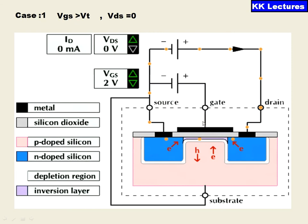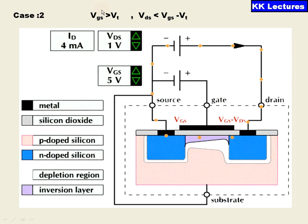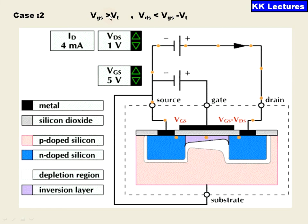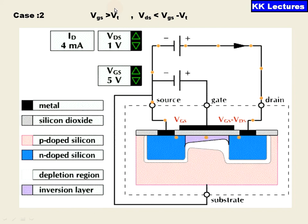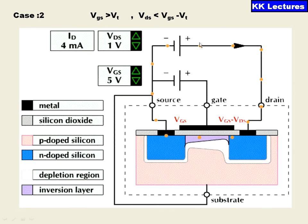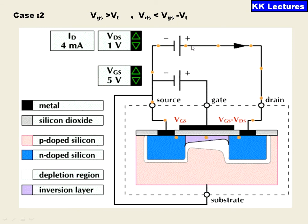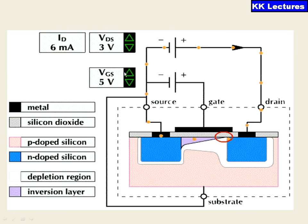When the gate voltage is greater than the threshold voltage and the VDS value is less than the effective gate voltage, there is a possibility of current flowing within the circuit. This is how our NMOS transistor is going to work.